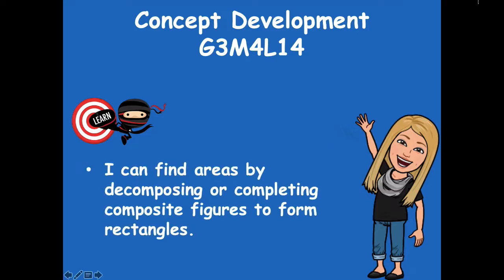Our learning goal for today is: I can find areas by decomposing or completing composite figures to form rectangles. Remember, decomposing to find areas is where you're breaking apart a shape into more than one rectangle — two rectangles — finding the area of each and combining. And completing composite figures is where we are turning a shape that might be missing a part, making it a square or rectangle, finding the area of that, and then subtracting out the smaller piece that's missing.